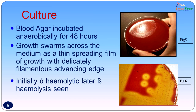The pus was cultured on blood agar and incubated anaerobically for 48 hours. The growth swarmed across the surface of the medium like a thin film. The inoculation was done only at one end of the blood agar and it swarmed right down to the other edge. Initially the organism gave alpha hemolysis which later became clear-cut beta hemolysis with prolonged incubation.